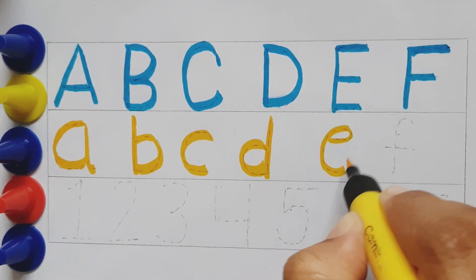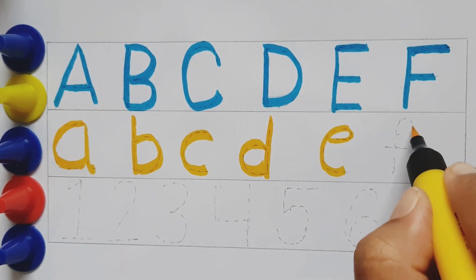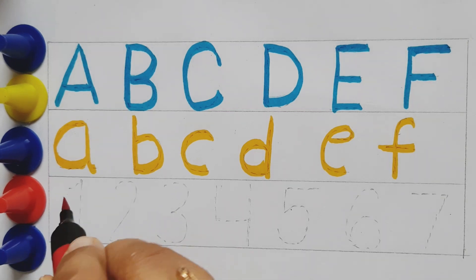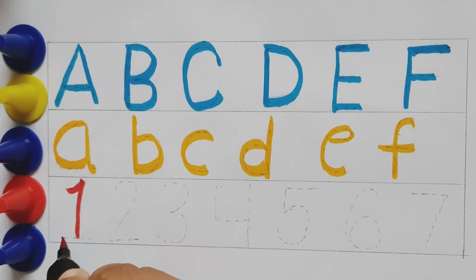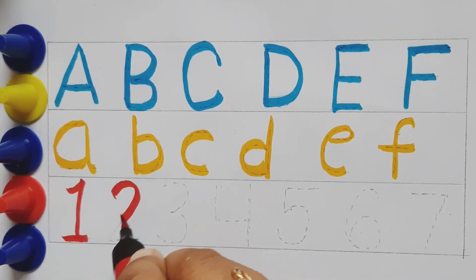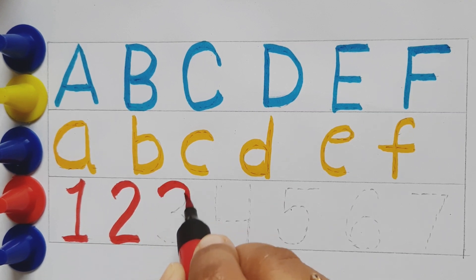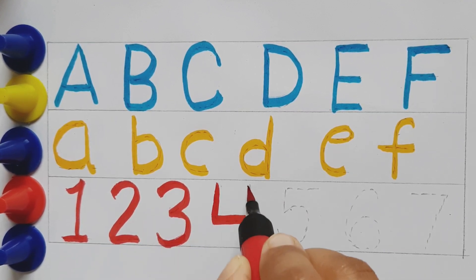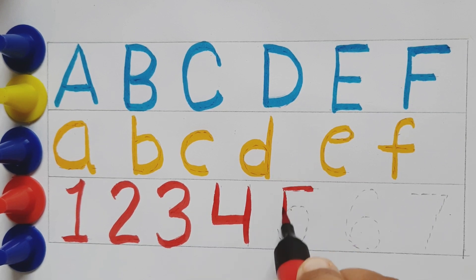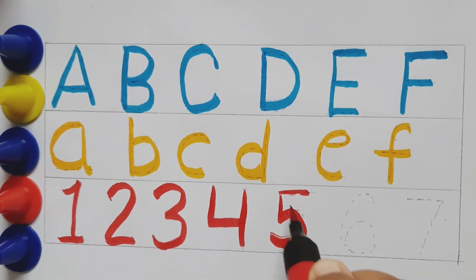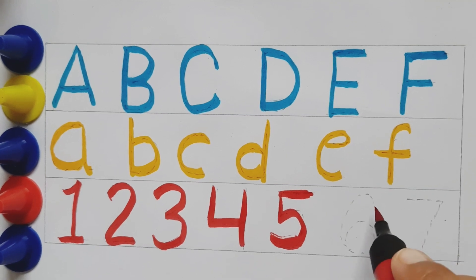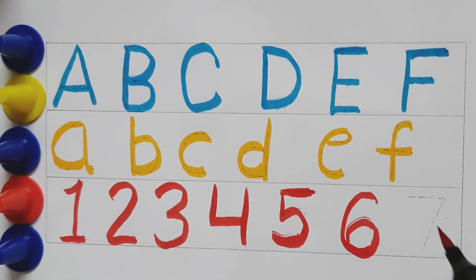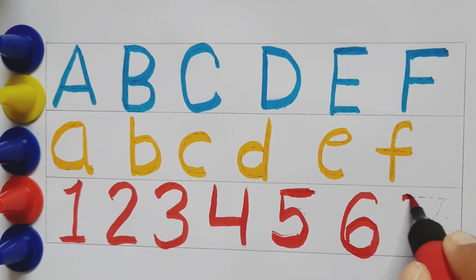Small e, E for elephant. Small f, F for flag. Red color. One, two, three, four, five, six, seven.